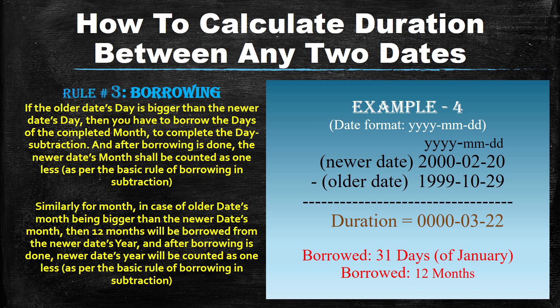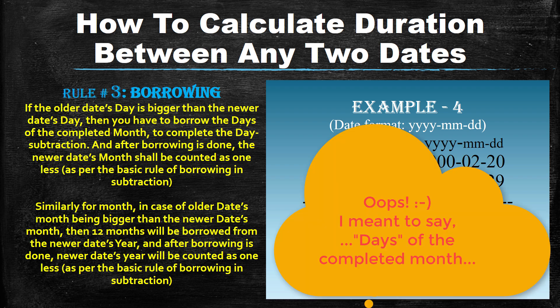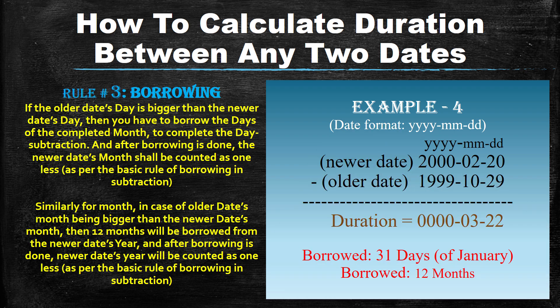Suppose you calculate the duration between 29th October 1999 and 20th February 2000. We cannot subtract 29 from 20, so we borrow the days of the completed month from the newer date. The completed month is January, which has 31 days. So 31 plus 20 equals 51, and 51 minus 29 equals 22. Because we borrowed a month, the newer date's month is now 1. But we still cannot subtract October (month 10) from 1, so we borrow 12 months from the year: 12 plus 1 equals 13, and 13 minus 10 equals 3. The duration is 3 months and 22 days.